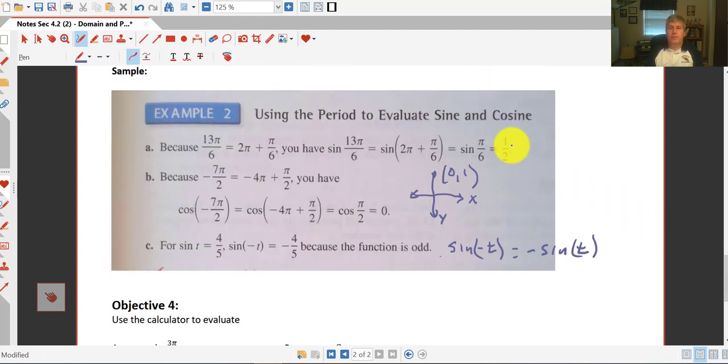We can use the period to evaluate sine and cosine. Since we know that they're both periodic and the period is 2 pi, we can subtract out or add the number of 2 pi's, the number of revolutions and get right back to our base. So we're saying 13 pi over 6 is really the same as 12 pi over 6 plus 1 pi over 6. So we can cancel out that one revolution and just evaluate it as pi over 6 and the sine of pi over 6 is 1 half. So that's going to be the same thing as the sine of 13 pi over 6.